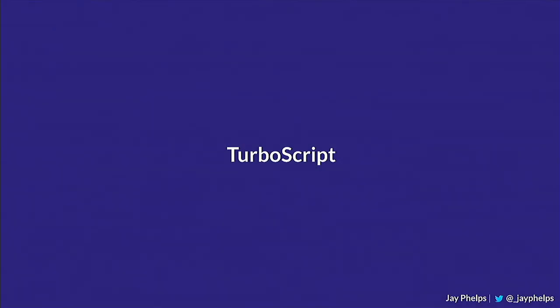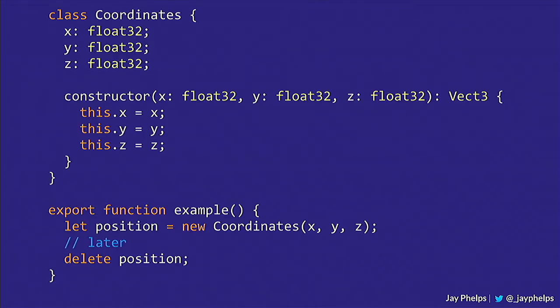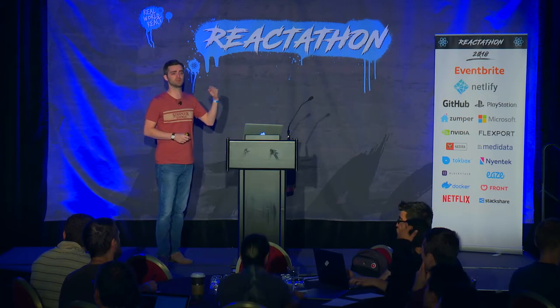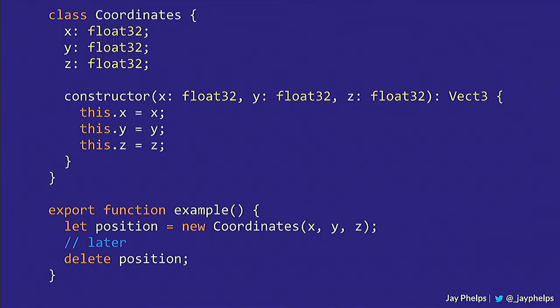To give a little taste of that, there's a language called TurboScript, created specifically for WebAssembly — it only targets WebAssembly. It aims to use the exact same syntax as TypeScript, so it should feel very familiar. It has some semantic differences — you'll see float32s and i32s, which you don't have to worry about in JavaScript. And when you allocate memory — like creating coordinate objects — you have to explicitly call delete on it, similar to malloc and free in C.